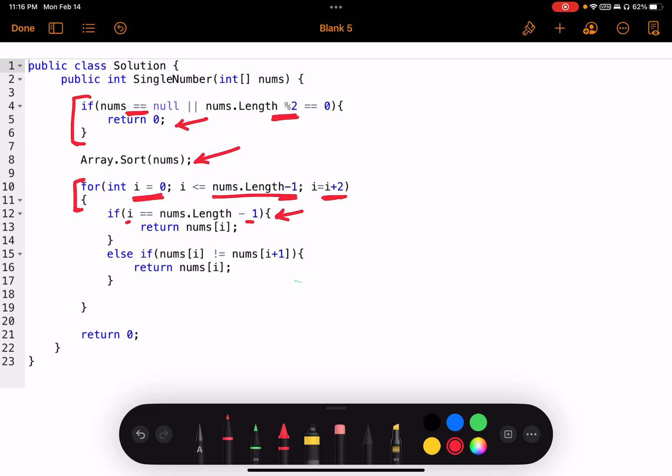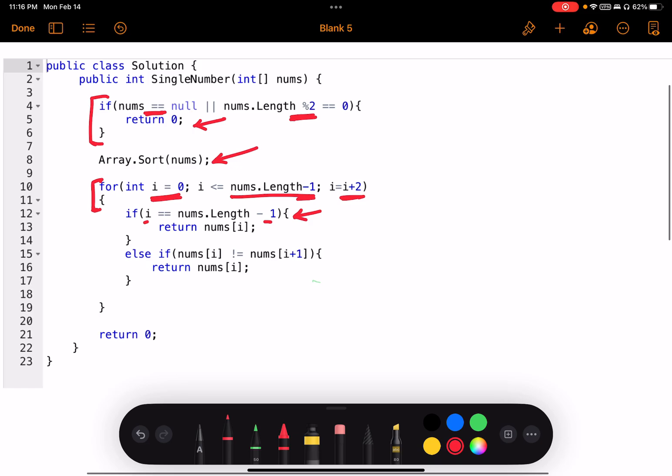Then I am comparing if I am at the end of my array, and so far I haven't found the unique element, so I need to return nums[i], which is the last element in the array.